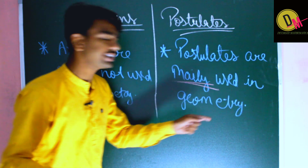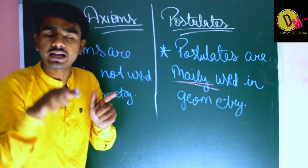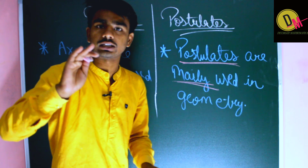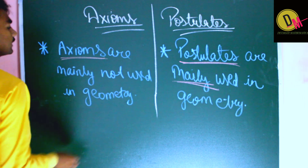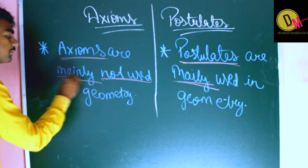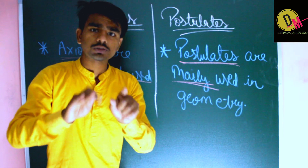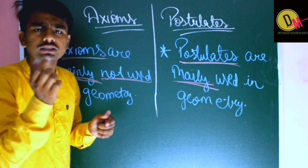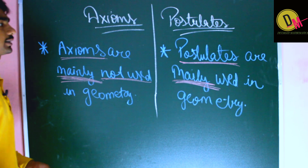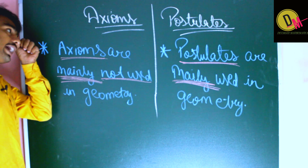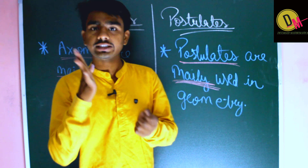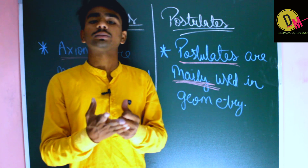So postulates are mainly used in geometry, whereas axioms are mainly not used in geometry. Axioms are used in other fields. It can happen but mainly axioms are not used in geometry. So to summarize, this was about Euclid axioms — the main lecture about axioms and postulates.